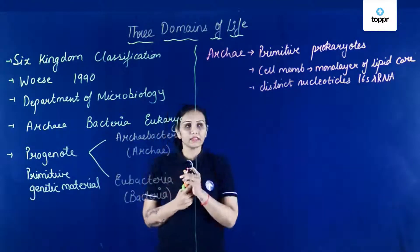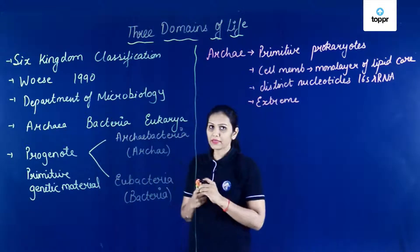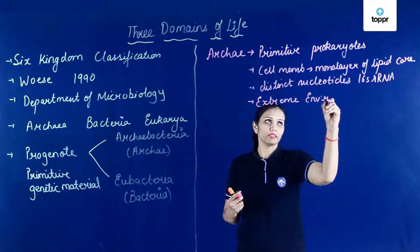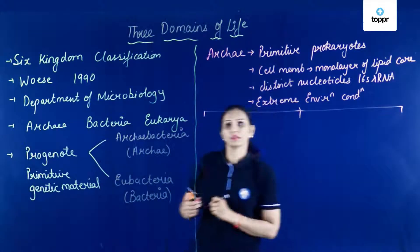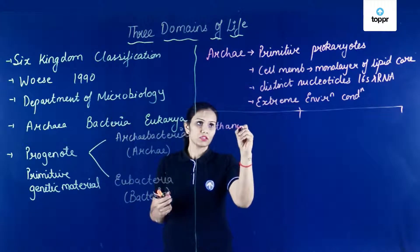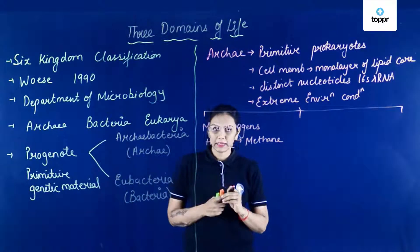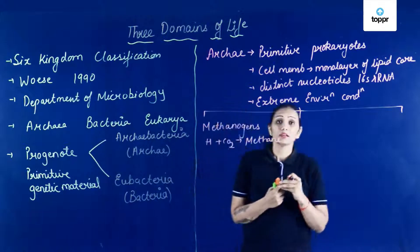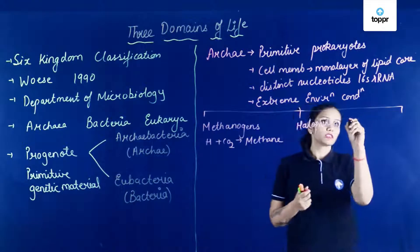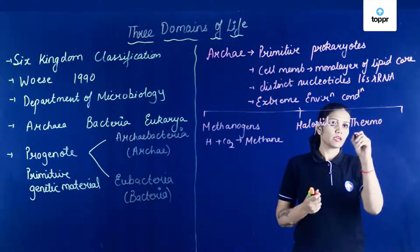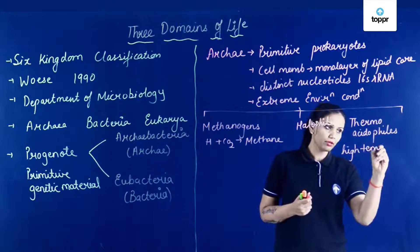Archaea wo organisms hai jo kahan pe survive karte hai in the extreme situations. Aur ye extreme environmental conditions mein survive karte hai. Say for example, ye hai methanogens, jo ki metabolize karte hai hydrogen ko aur carbon dioxide ko so that methane can be formed. Kuch Archaea bacteria ho grow karte hai in the salty regions — halophiles extreme salt conditions mein survive karte hai. And some of them are thermoacidophiles, jo ki high temperature aur acidic environment mein grow karte hai.